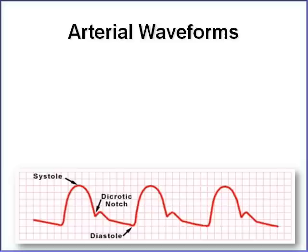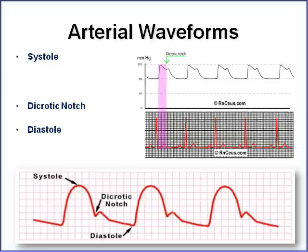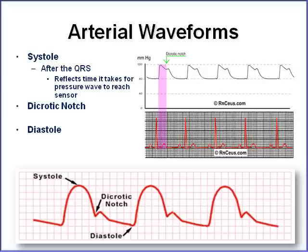On to arterial lines. Interpreting the A-line is a lot easier than CVP waveforms. There are three parts of the arterial line waveform: systole, which is the top part of the wave; the dicrotic notch; and diastole, which is the bottom part. Systole reflects the time it takes for the pressure wave to reach that sensor after the ventricles have contracted. The dicrotic notch is when the aortic valve is closing — you see a little blip. And diastole is the result.